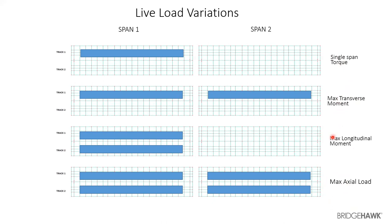Here I showed only two tracks, but when we were designing Pune Metro, some spans had six tracks — making it a very complicated configuration. The line model you see is from Midas, and it has to be appropriately represented. The bisecting lines are bracings, because this was a steel span. If you have six tracks, you have to represent them accordingly, create all combinations accordingly, and take care of all these loads.